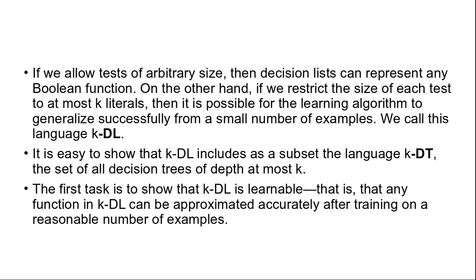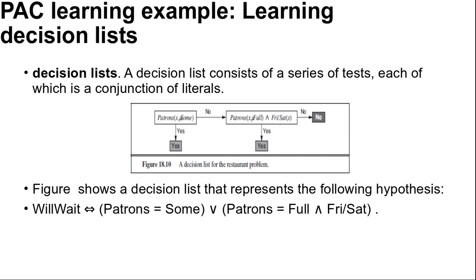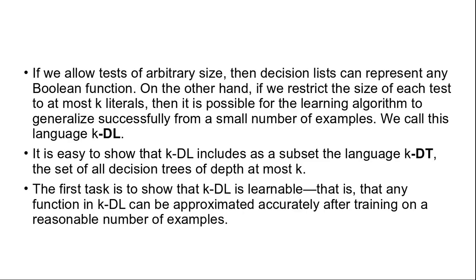It is easy to show that k-DL includes as a subset the language k-DT, the set of all decision trees of depth at most K. The first task is to show that k-DL is learnable, that any function in k-DL can be approximated accurately after training on a reasonable number of examples.